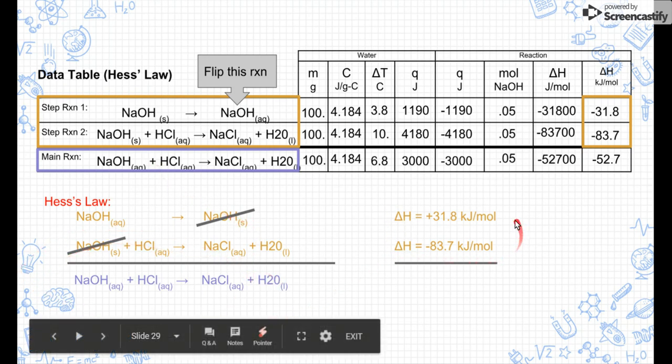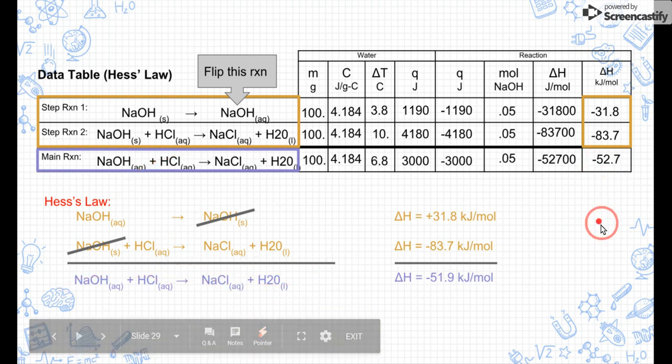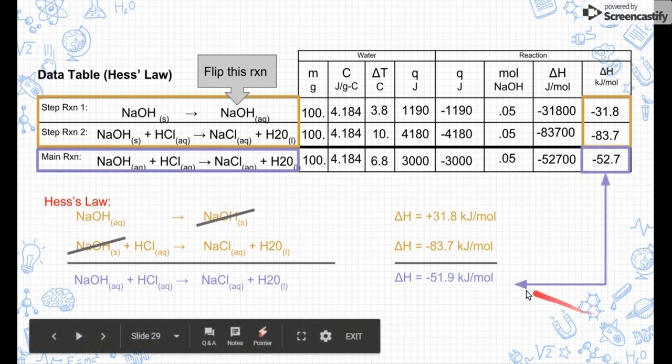So according to Hess's Law, we can add these two enthalpies together. And that's what we get, at least for my data. You might get something a little bit different, but hopefully you're going to see something really cool here. So notice that this is the enthalpy of this reaction according to Hess's Law. And we actually did this reaction in real life. So let's compare those two values. Our reaction, according to Hess's Law, should have yielded negative 51.9 kilojoules per mole.